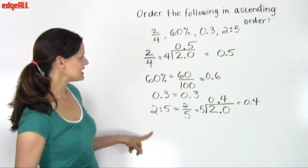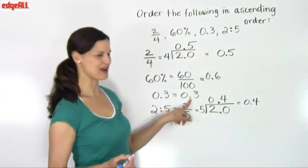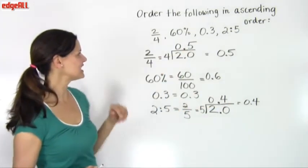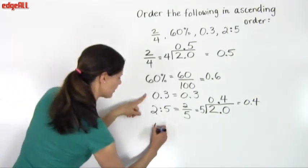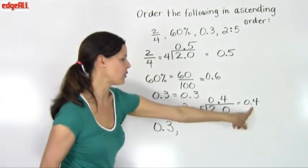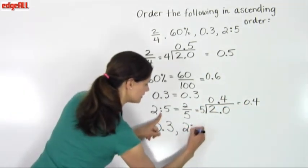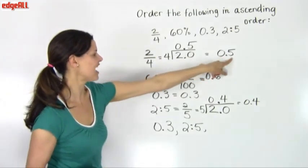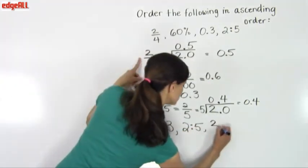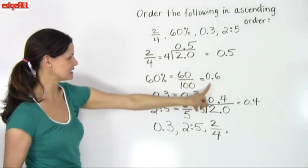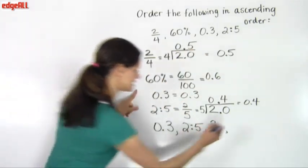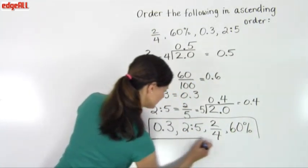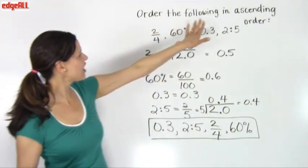So now I can place these in order and I can see that my smallest is going to be 0.3, then 0.4, 0.5, and 0.6. And so if I'm to put these back in ascending order, I first want my 0.3 and then next is 0.4, which is my ratio of 2 to 5. So the 2 to 5 comes next, so I've got 0.3, 2 to 5. Then I've got my decimal of 0.5, so 2 fourths. 2 over 4 is next. And the largest one is my decimal of 0.6, which is the 60%. So 60%.